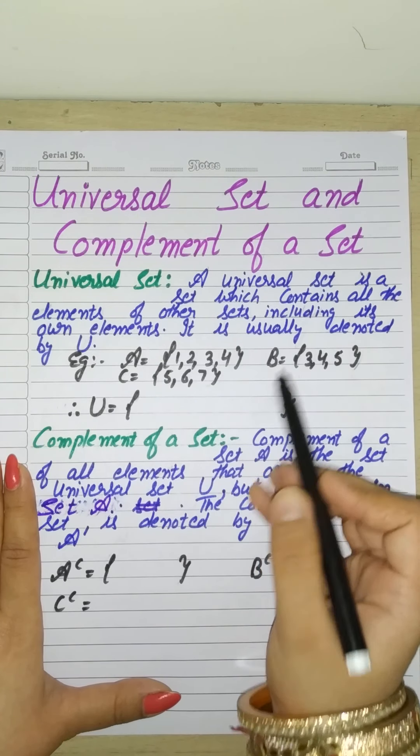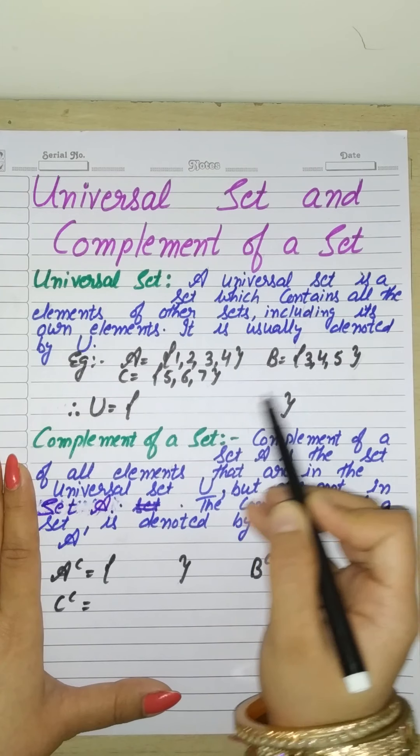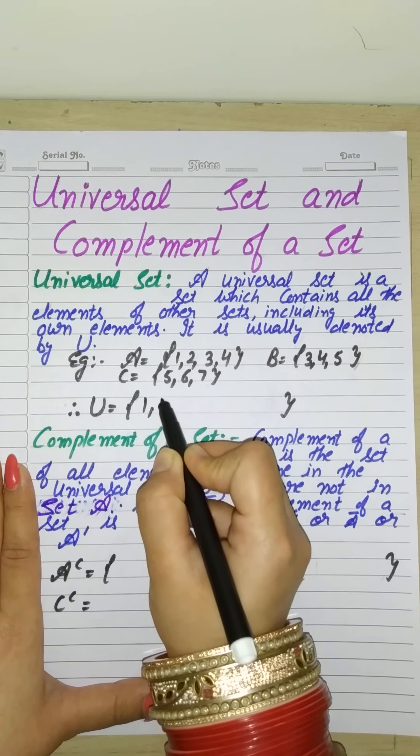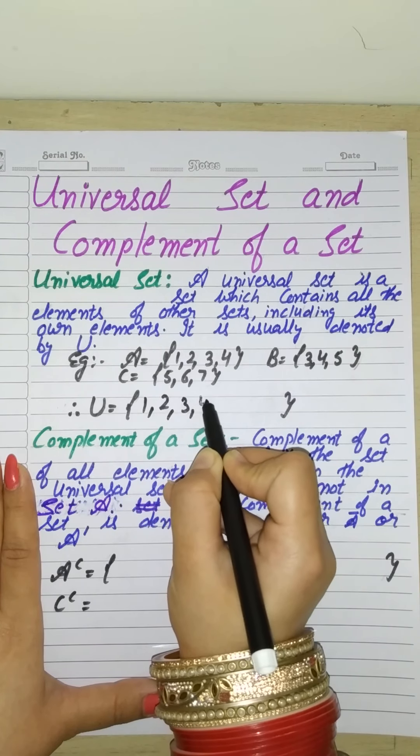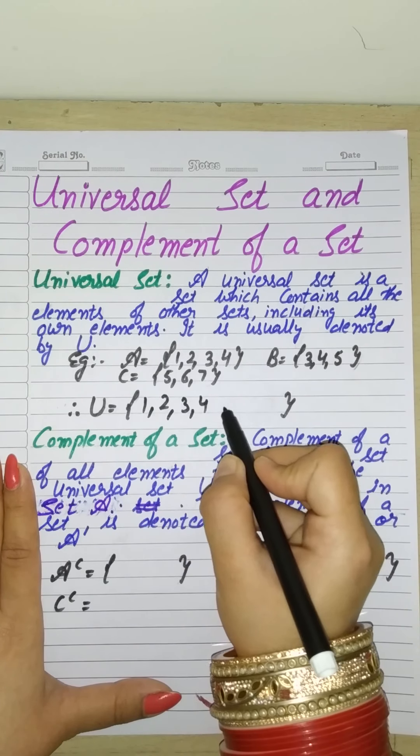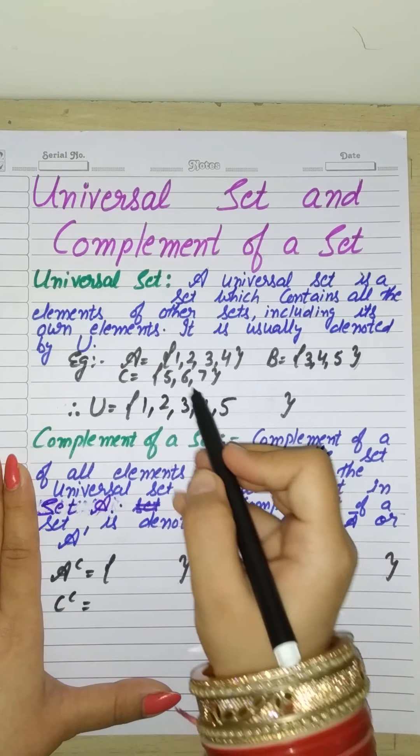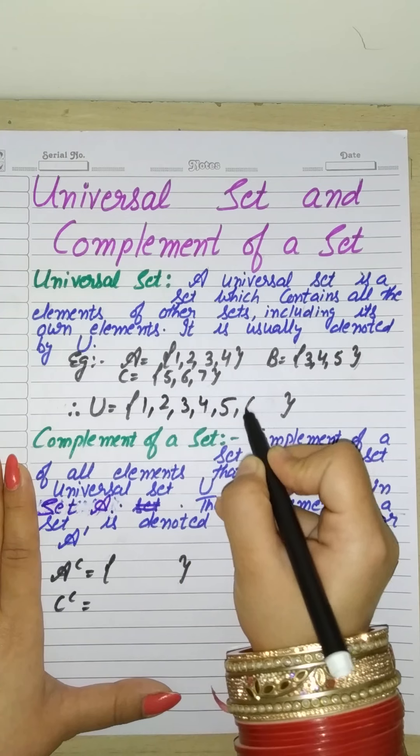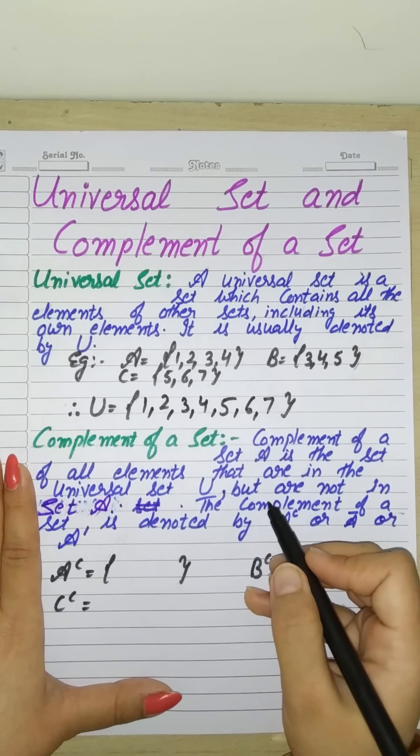3, 4 is repeated, so we will not write them two times in universal set. The new element is 5, we will write it. So starting with 1, 2, 3, 4, these are written. The new element is 5, it is written. 5 is repeated in C, so we skip it. The new elements are 6 and 7, we write them. This is your universal set.